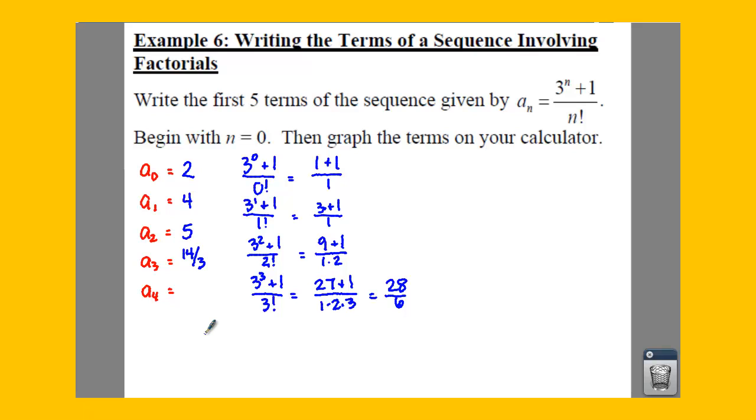And then if we plug in a sub 4, we're going to say we have 3 to the 4th power plus 1 all over 4 factorial. That will give us 81 plus 1 all over 1 times 2 times 3 times 4.